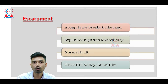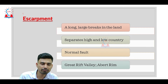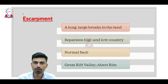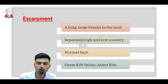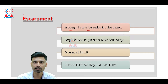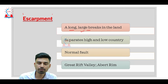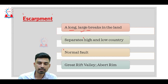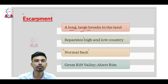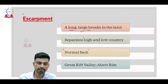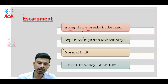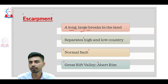The first landform in this series is the escarpment. An escarpment in simple terms can be defined as a long, large break in the land surface. This break separates the higher region and the lower region of a country or state. Escarpments are observed around normal faults. Examples include the Great Rift Valley in the African continent, as well as the Abut Rim in the United States of America.